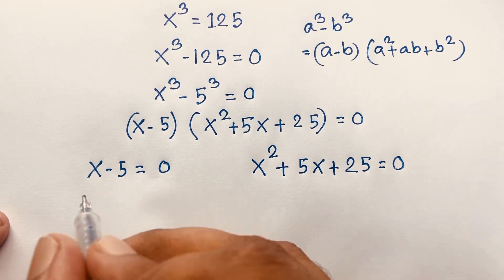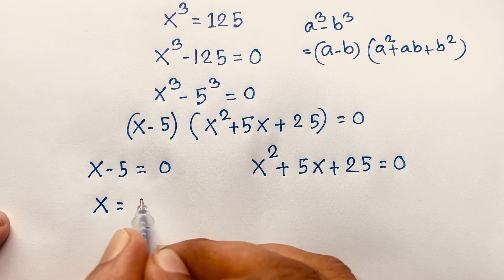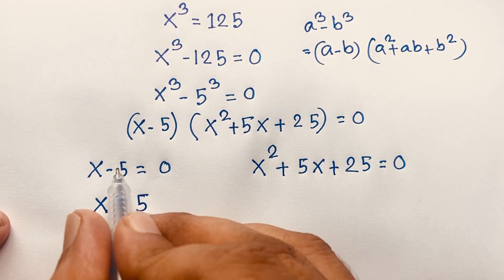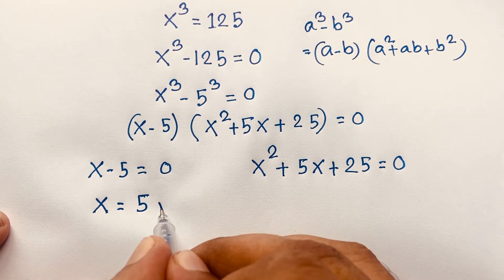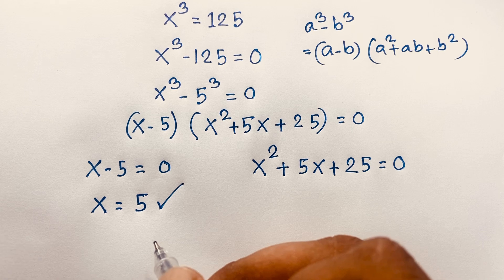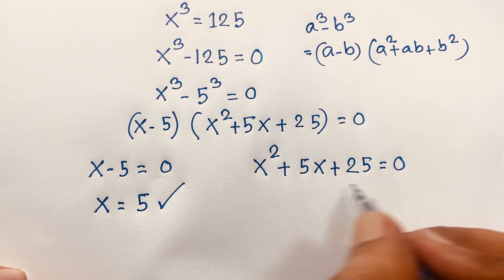From the first case, x minus 5 equals 0, so moving the negative 5 to the other side gives positive 5. Our first solution is x equals 5.